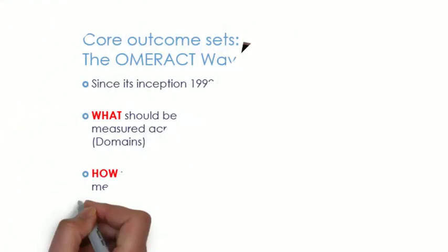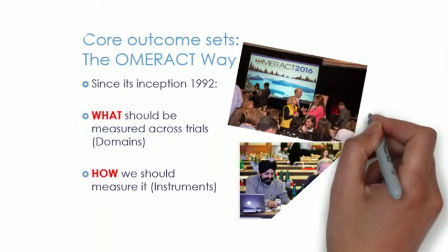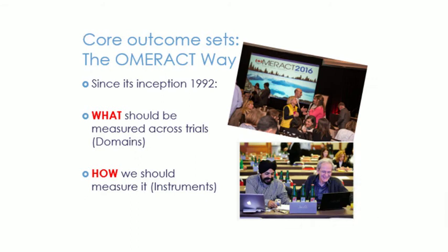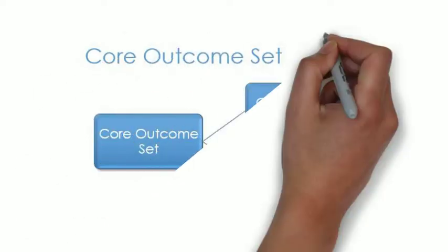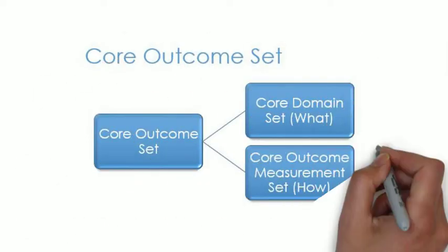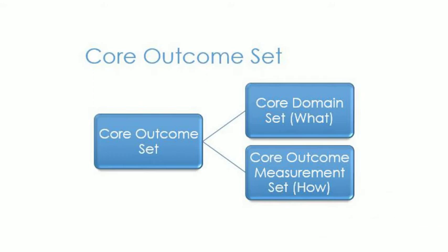OMRACT has developed a process called the OMRACT Way to describe its approach to selecting core outcome sets. That is, the most important outcome domains and outcome measurement instruments that should be used in studies evaluating the benefits and harms of an intervention for a rheumatic condition. It is a two-step process.